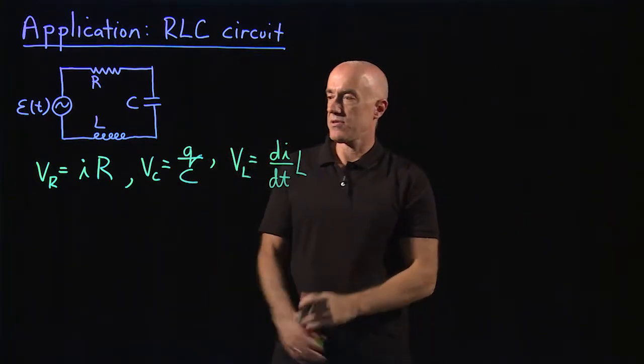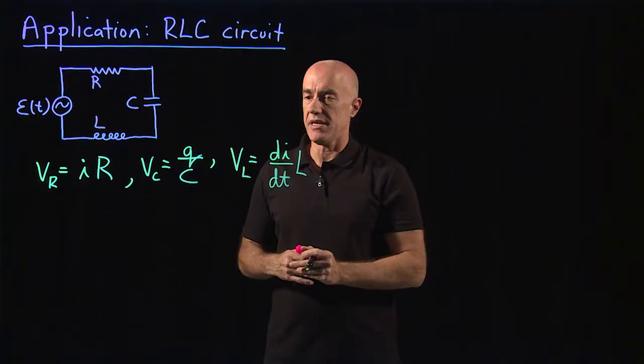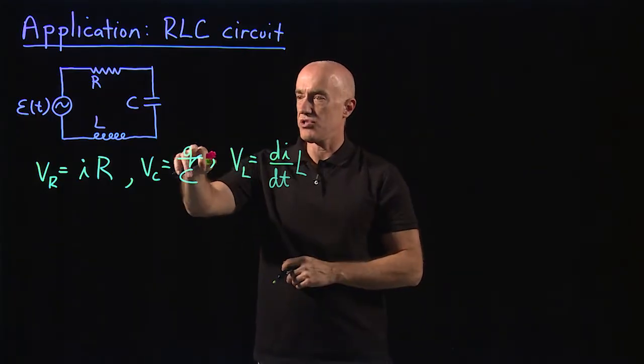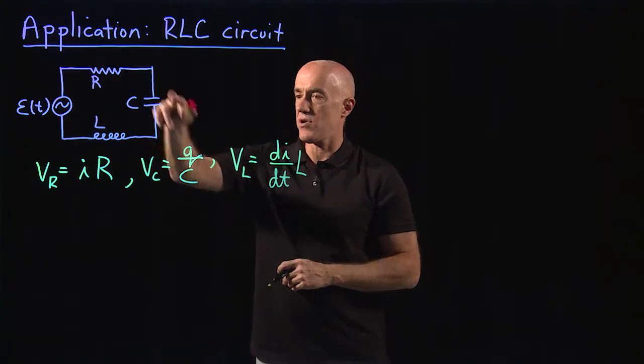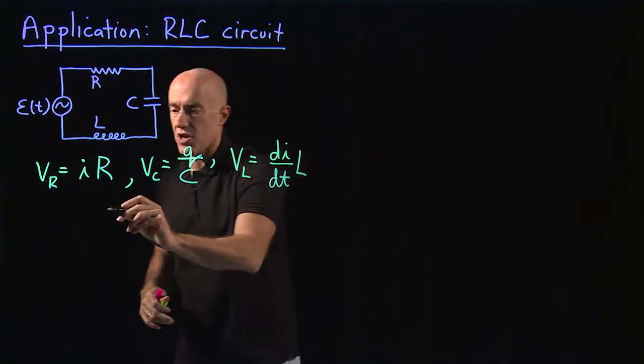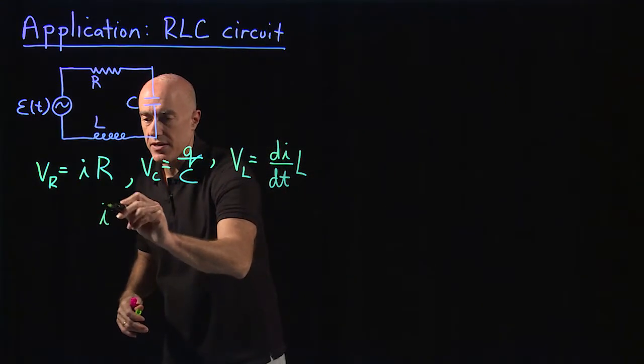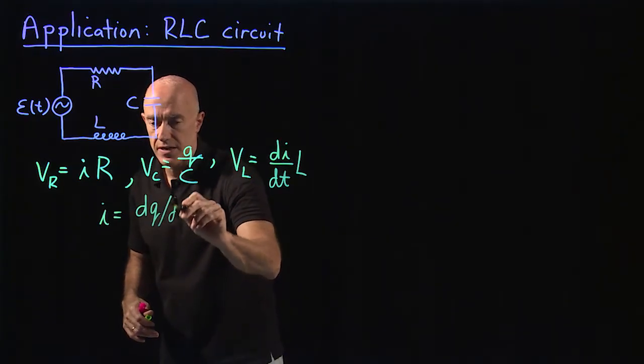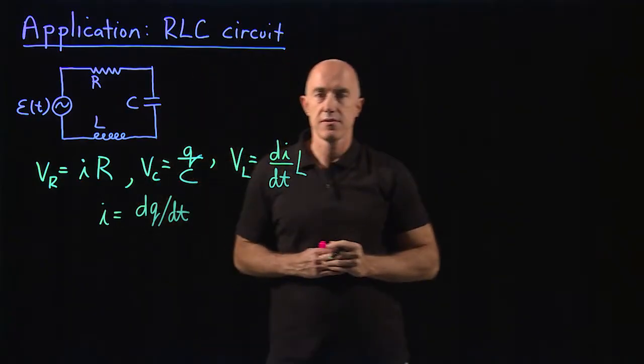So these define essentially the circuit elements. And then there's a charge on the capacitor and a current in the circuit. And those are related by the current is equal to the time derivative of the charge.